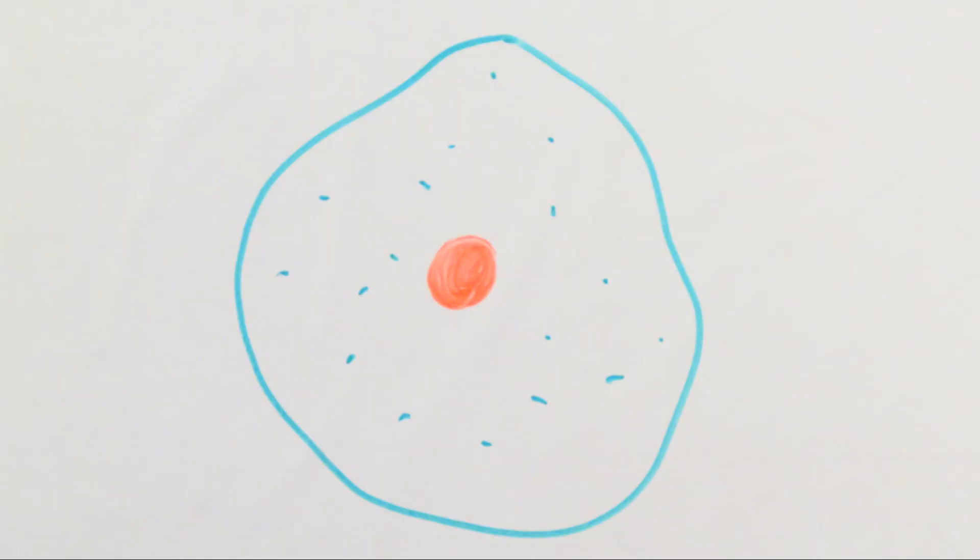Remember the nucleus of every cell contains a complete copy of that organism's DNA so the nucleus of this one animal cell contains all the DNA necessary to make a copy of this animal, a clone.